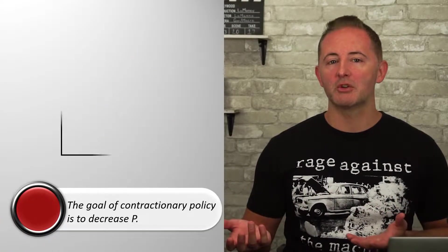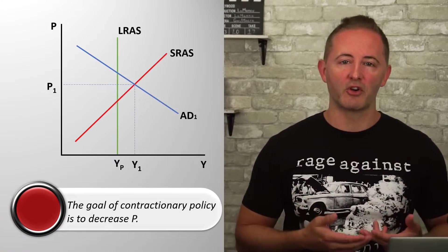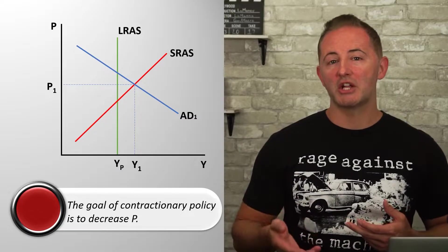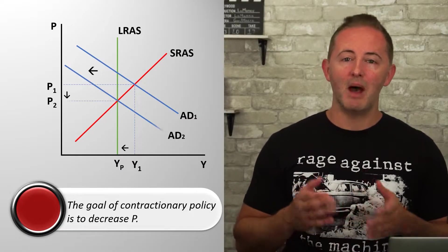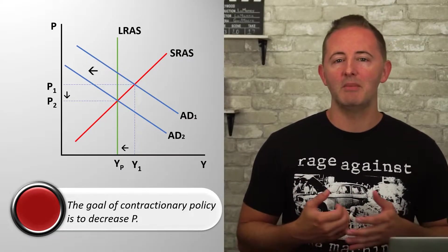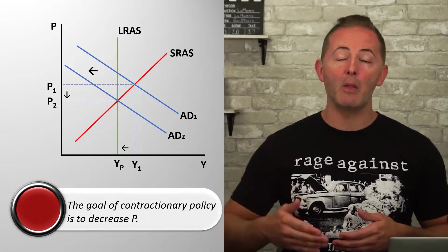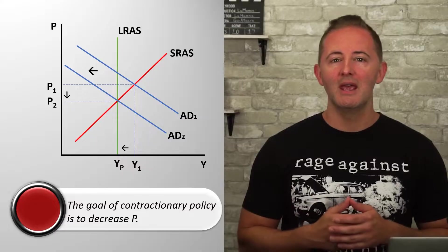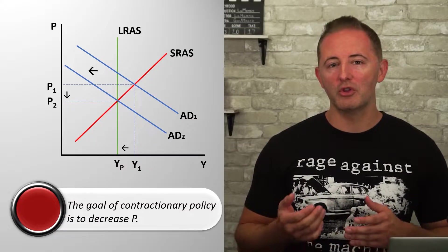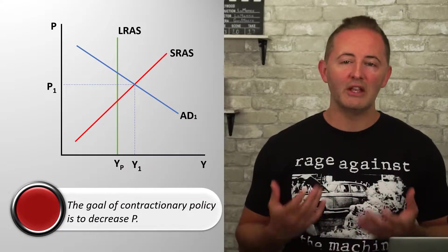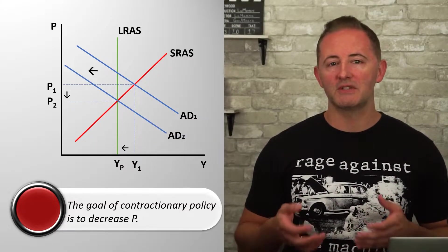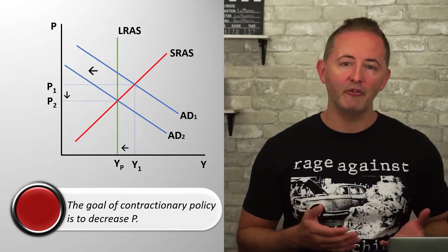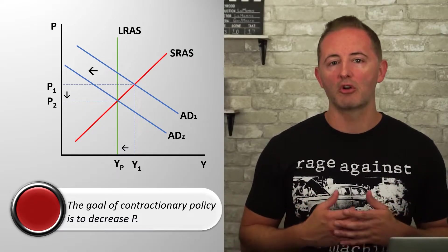It's the same thing with contractionary policy, but in reverse. Contractionary fiscal policy and contractionary monetary policy can be used to bring down the inflation rate, and therefore used when there is an inflationary gap. Each policy shifts the AD curve left, bringing the economy back to long-run equilibrium.